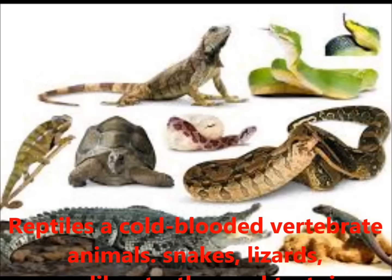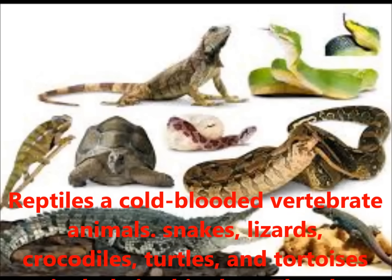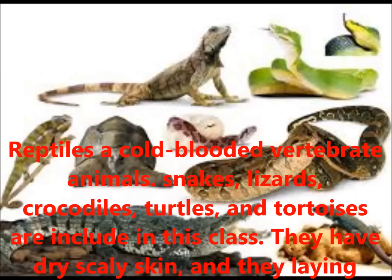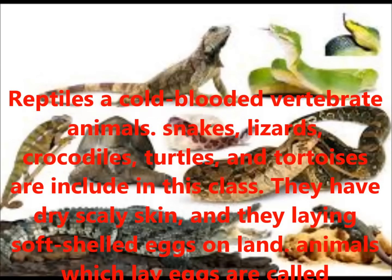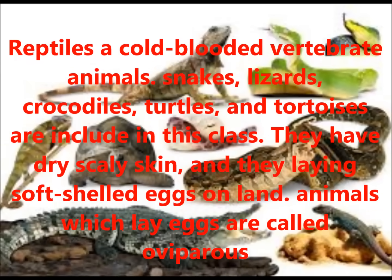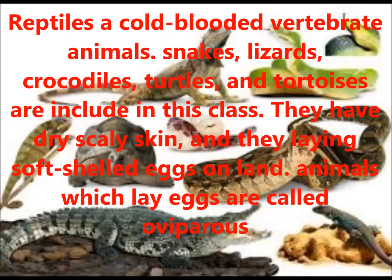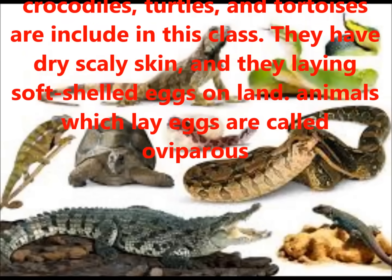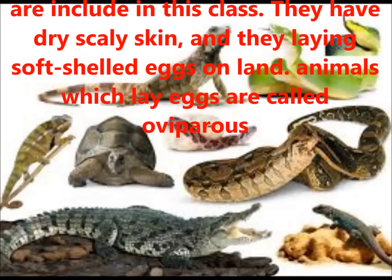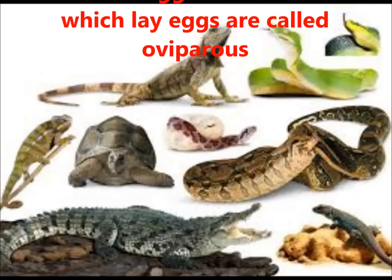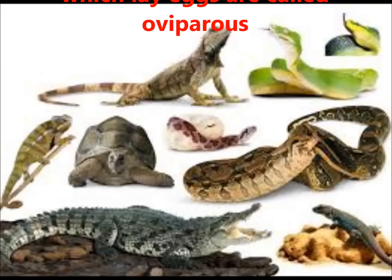Reptiles are cold-blooded vertebrate animals. These include snakes, lizards, crocodiles, and tortoise. They are distinguished by having a dry, scaly skin and typically laying soft-shelled eggs on the land.